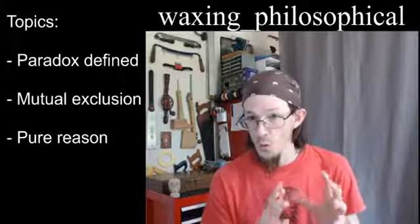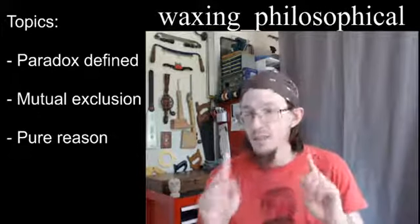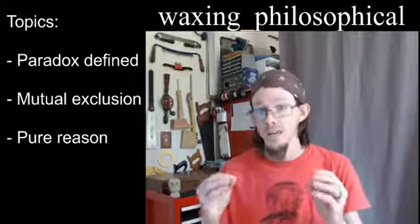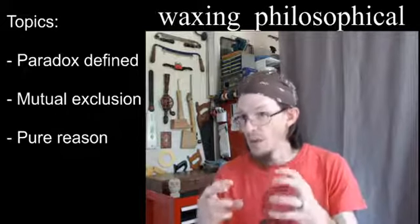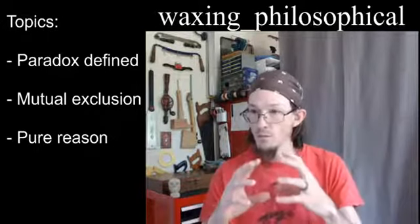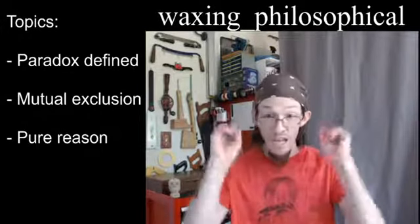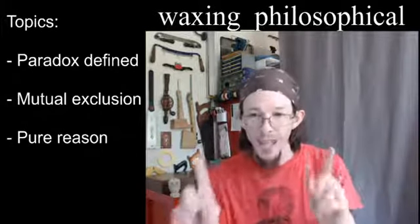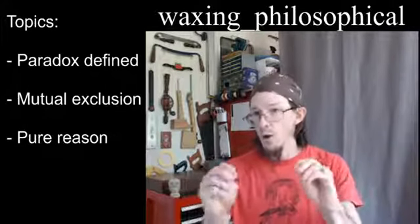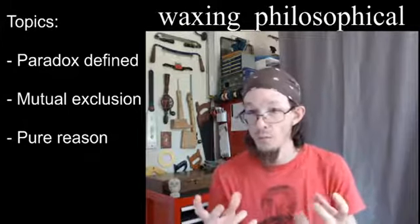When we're in the realm of pure reason, we can think about paradoxes and consider what mutual exclusivity means — what kinds of relationships that implies and what we can possibly know about it. It also means we can entertain the idea of paradoxical existence — we can think about the fact that I could be in two places at the same time. What would that mean?